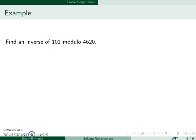Let's find an inverse of 101 modulo 4620. We're going to start by finding the Bezout coefficients, so we start by using Euclid's algorithm. We'll divide 4620 by 101, which is 45 with a remainder of 75.